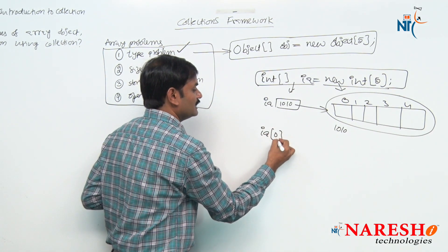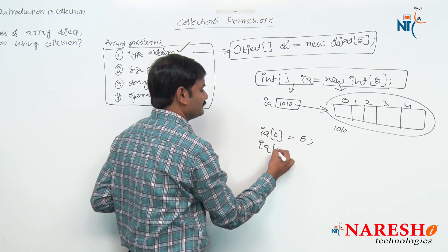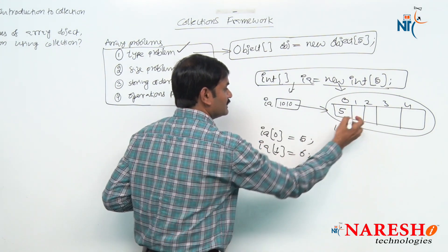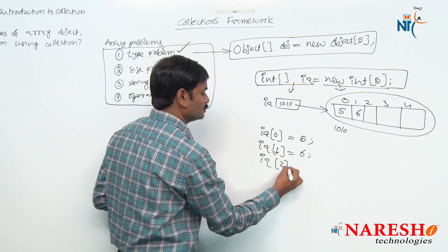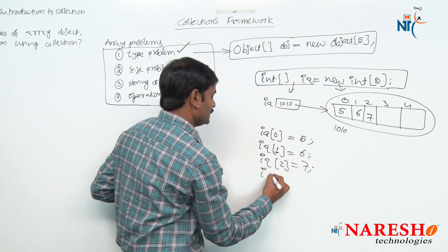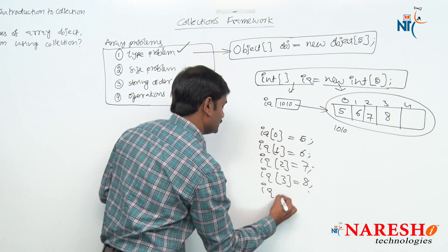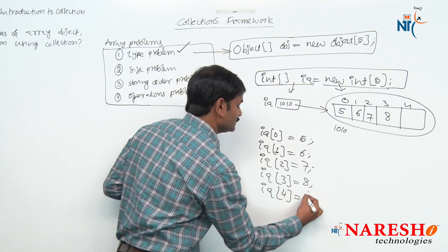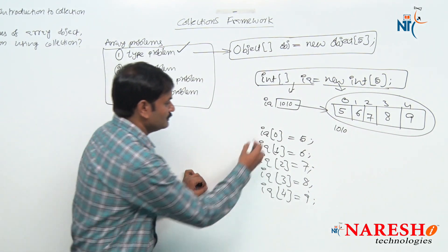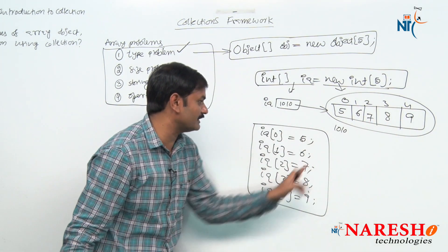We can store only 5 values in this array. ia[0]=5, ia[1]=6, ia[2]=7, ia[3]=8, ia[4]=9 — so 5 values stored in 5 locations, which is fine.